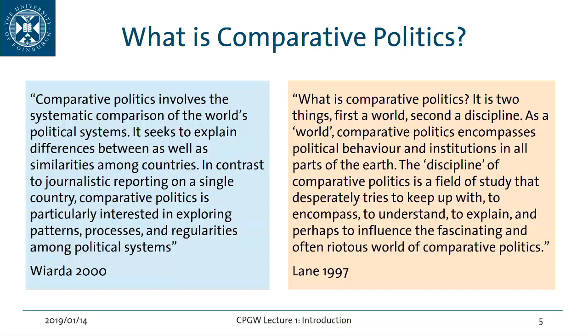Let's think about what comparative politics actually is. I have two definitions that go along the same lines. The first one is from Viarda, who points out that comparative politics always involves systematic comparison between political systems. We're not looking at entire societies or economies — we're looking principally at political systems. And we seek to explain both similarities and differences: why are some things similar elsewhere, and why do other systems do things differently?